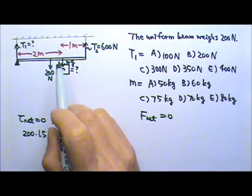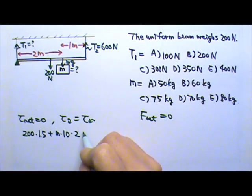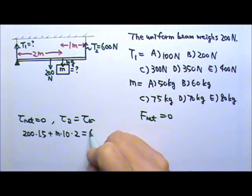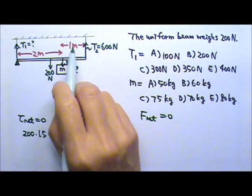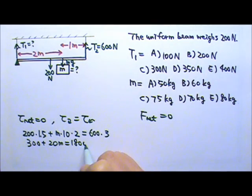I'm just going to use 10 for G. What is the lever arm for Mg? It is 2 meters. The counterclockwise torque is produced by 600N. 600 times the lever arm would be 3 meters. So I have 300 plus 20M equals to 1,800.